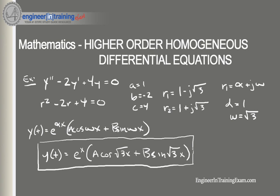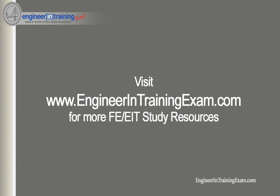That's all for today. If we had initial values for any of these problems, we could plug those in to determine all of the constants. In the second example I used A and B as constants; in the first I used C1 and C2 — either notation is fine, a constant is a constant. If you have more questions, hop on over to EngineeringTrainingExam.com, check out the other videos, and send me suggestions and feedback. Until next time, take care!